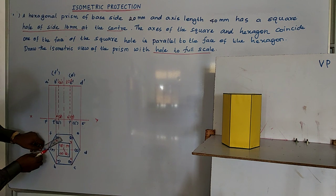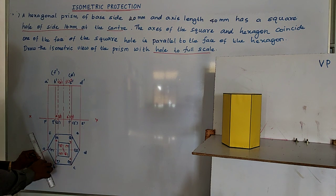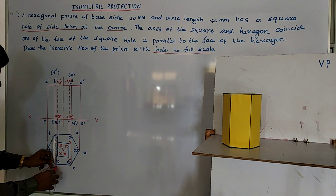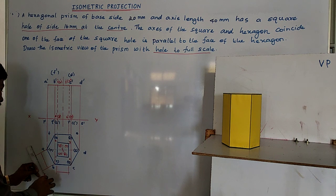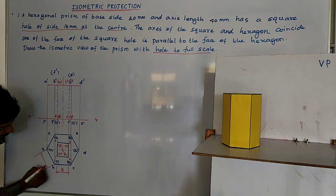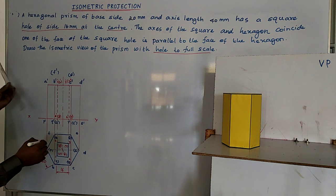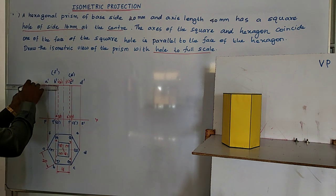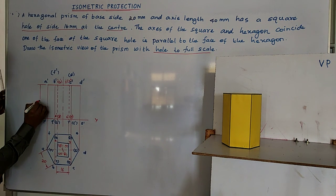Let us mark the dimensions. This side is 16mm, and the hexagonal side is 20mm. The total height is also 40mm. So now the top and front views are over.